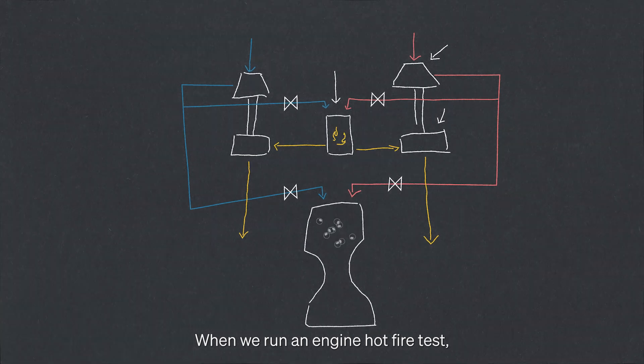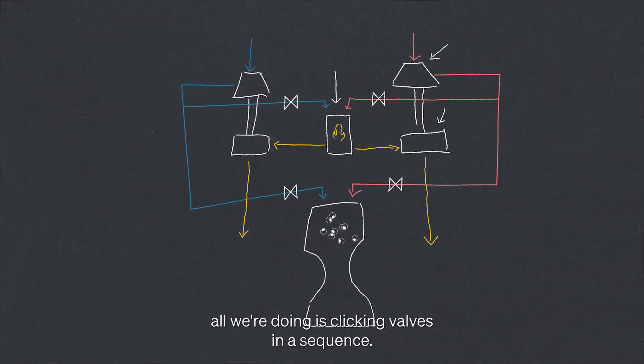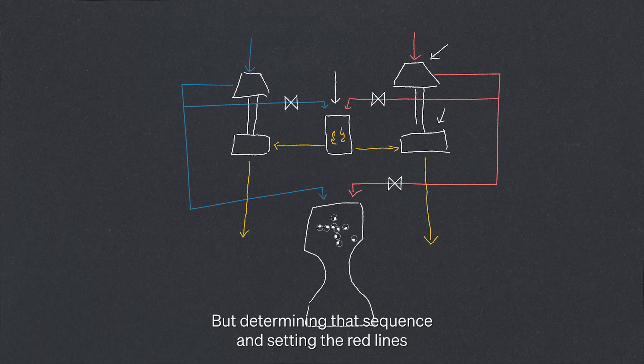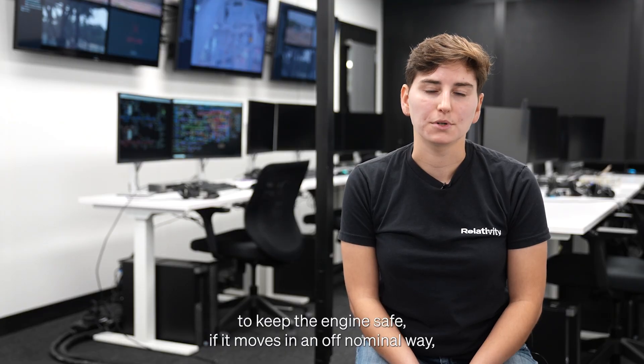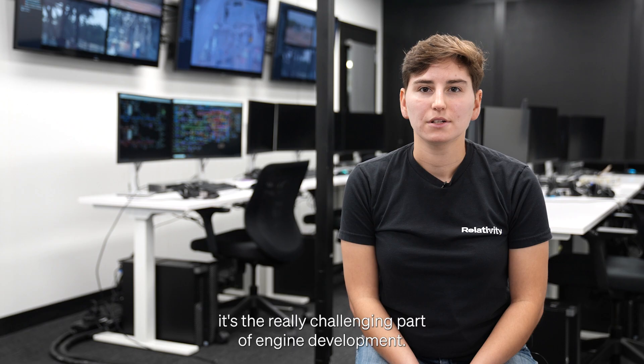When we run an engine hot fire test, all we're doing is clicking valves in a sequence, but determining that sequence and setting the red lines that keep the engine safe if it moves in an off-nominal way is the really challenging part of engine development.